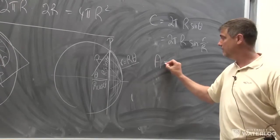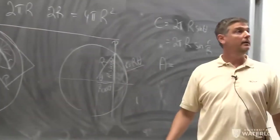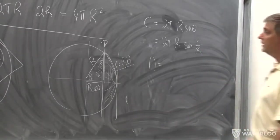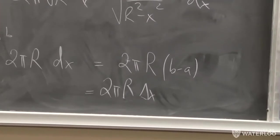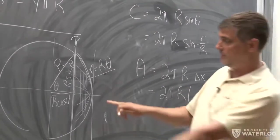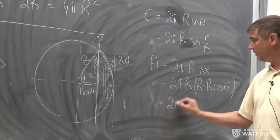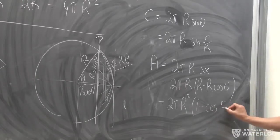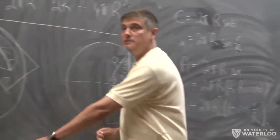We can get a formula for the area by using the previous formula. That disk is a slice of the sphere between two planes, and using the formula 2πR·Δx, where Δx is the distance between those two planes — which is R − R·cos(θ) = R(1 − cos θ) — we get the area as 2πR²(1 − cos θ), or equivalently 2πR²(1 − cos(r/R)).